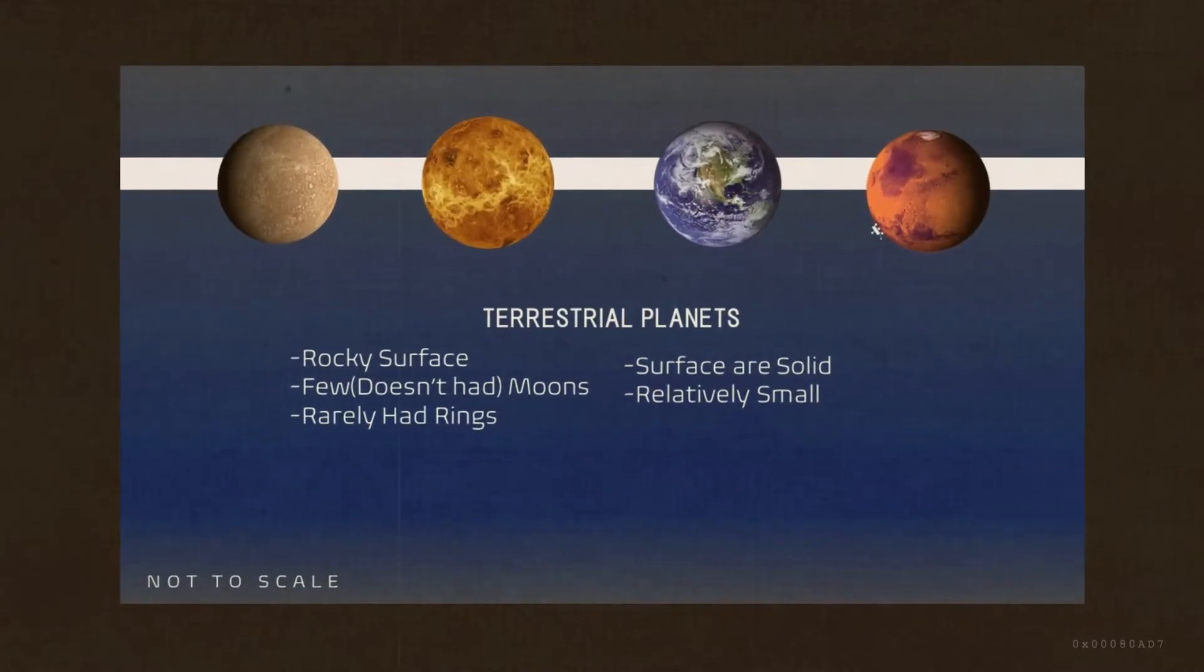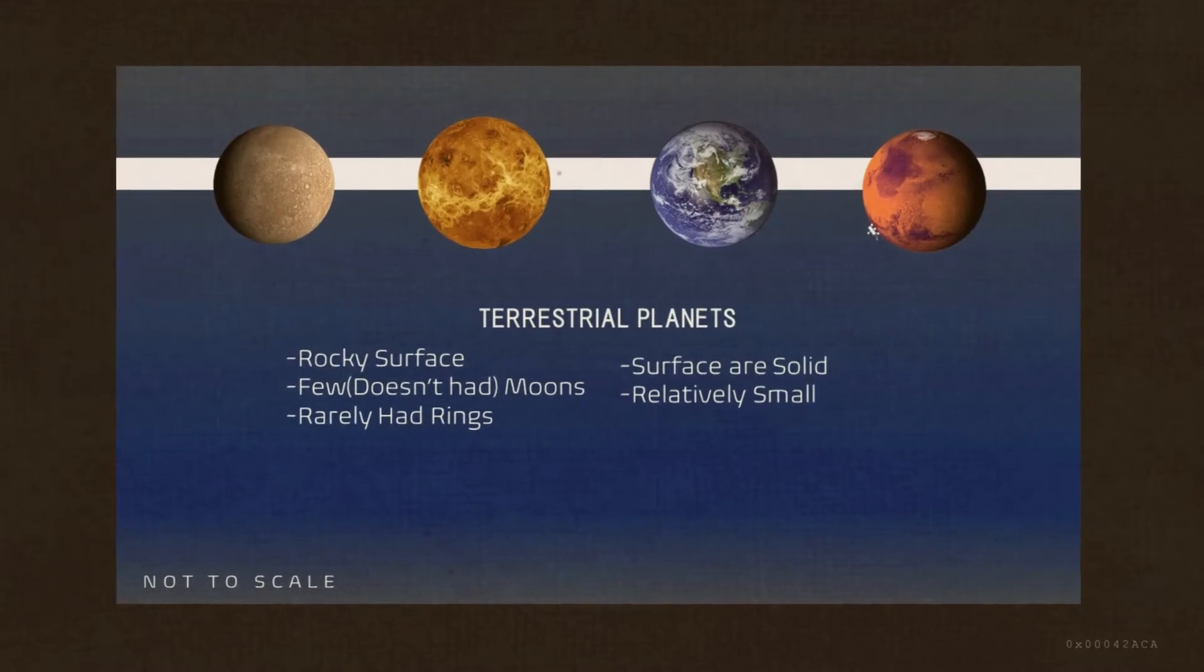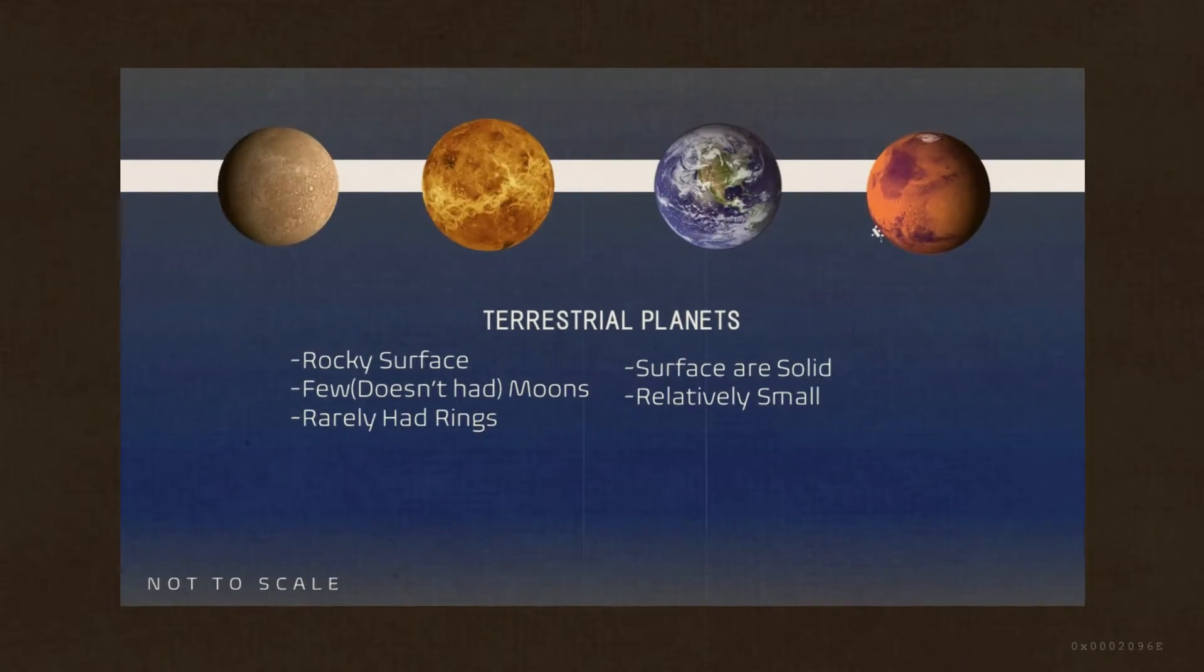Terrestrial planets have a rocky and solid surface. They have a few or sometimes no moons, they don't have a ring system, and they are relatively small.